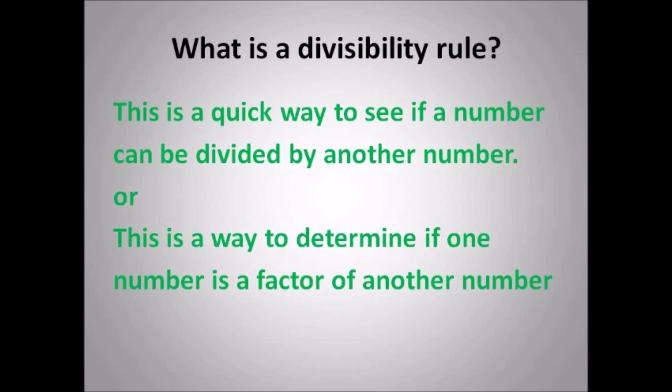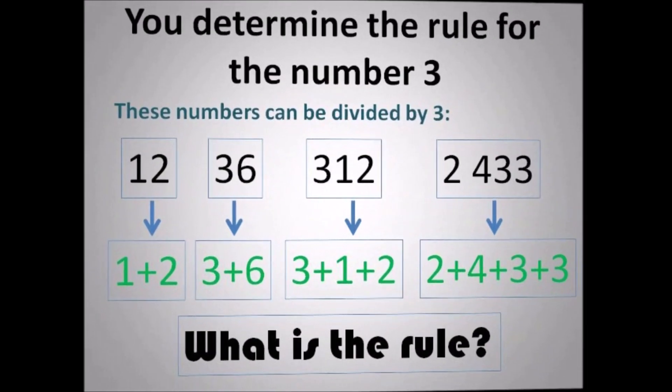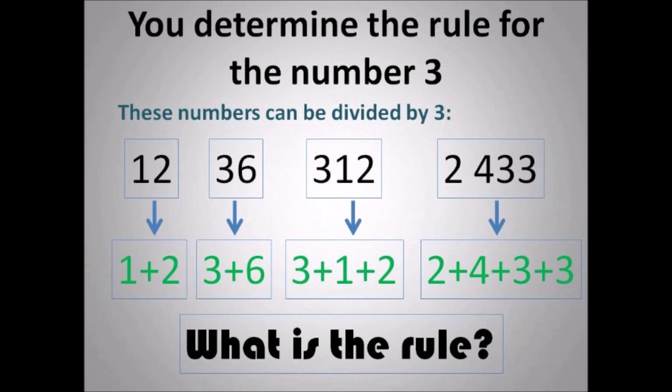So when we're talking about a divisibility rule, you will determine the rule for the number 2. These numbers can be divided by 2: 2, 4, 6, 8, 10, 126, 482, 1234. What is the rule? Why do I have those numbers highlighted in green? What is the rule for 2? You determine it.